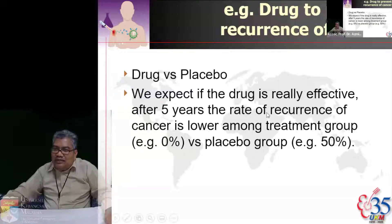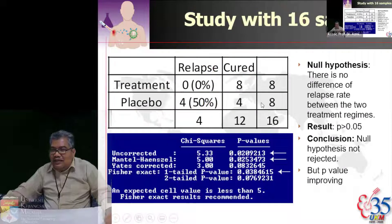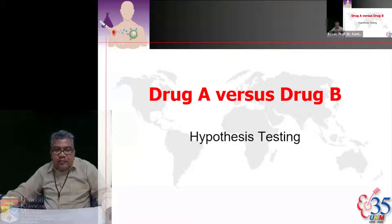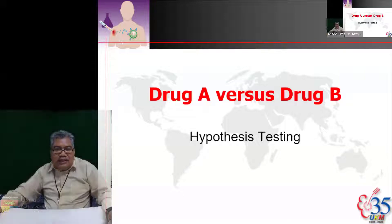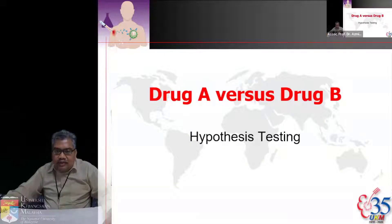Drug versus placebo: if you think the drug is really effective, the rate of recurrence of cancer is lower among the treatment group compared to the placebo group. With a large enough sample size, we have proven that treatment is better than placebo. Now we're going to go one step higher — we're going to compare drug A versus drug B.